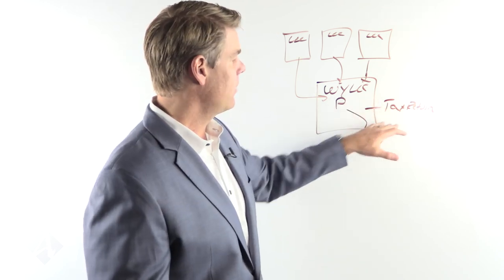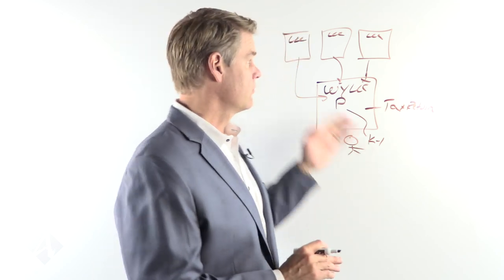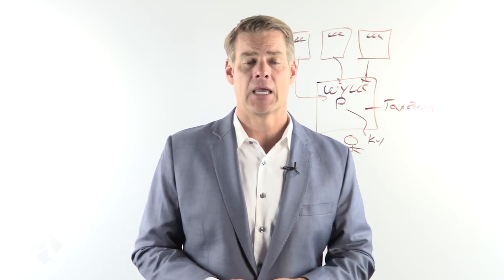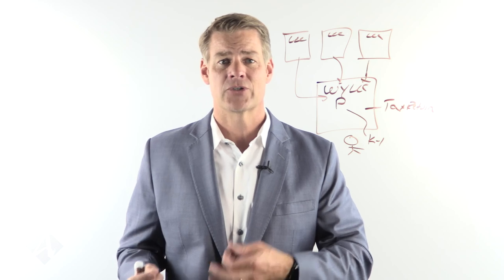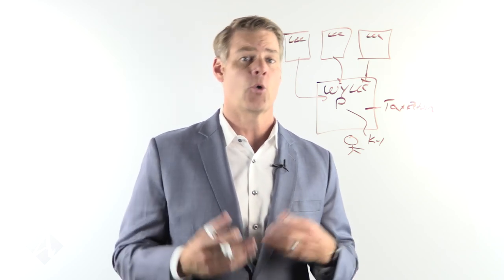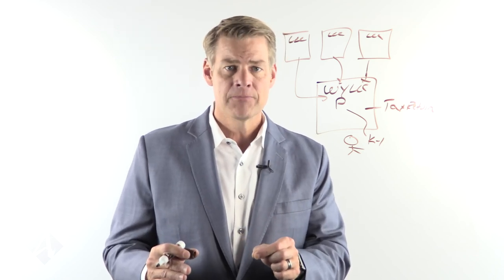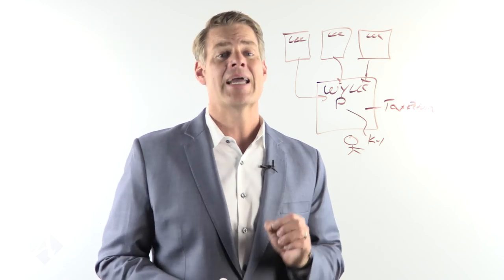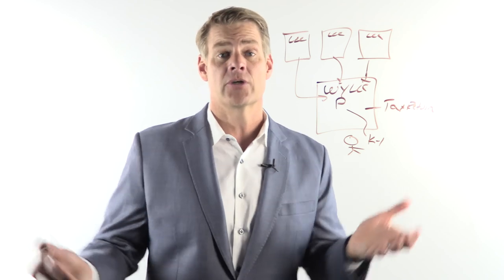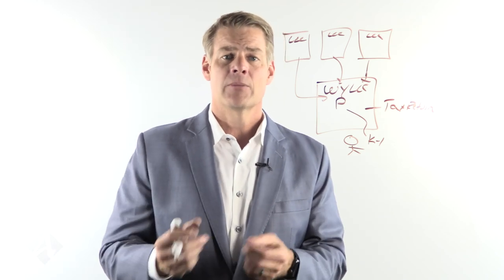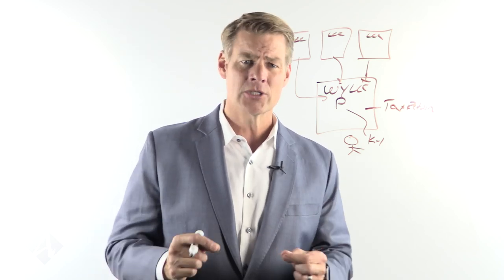They're going to look at your 1040 and they're going to see a K-1 from an LLC that owns various properties. The message you're sending to the underwriter is: I look like those sophisticated investors who invest in LLCs treated as partnerships or limited partnerships. The whole concept here is that I want the underwriters to think that I am a real estate professional with the experience, knowledge, and know-how to go out and invest in real estate. I want to convey that with how I prepare my returns.